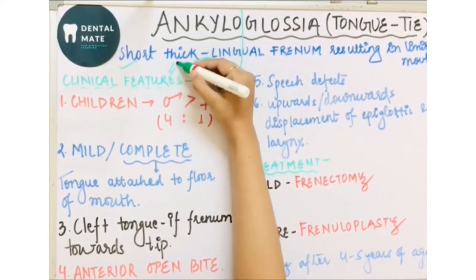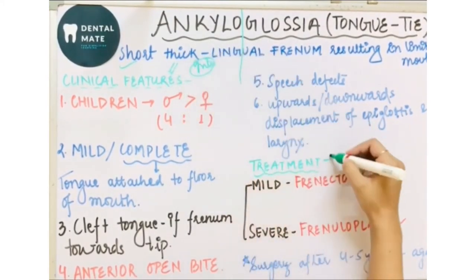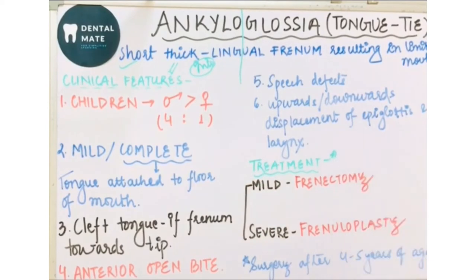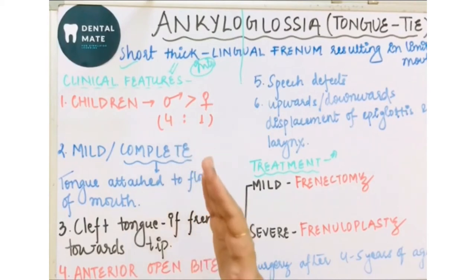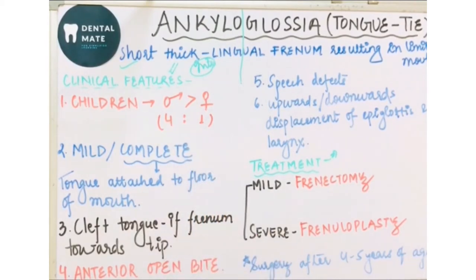Coming to the clinical features: ankyloglossia is more commonly seen in children, in which boys or males are more affected compared to females, and the ratio is four to one.